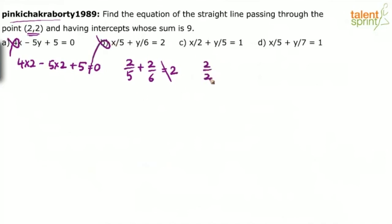Substitute in the third option: 2 by 2 plus 2 by 5 equals 1. No, 2 by 2 itself is 1. So this is 1.4 actually. So option C is also wrong.